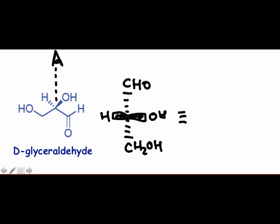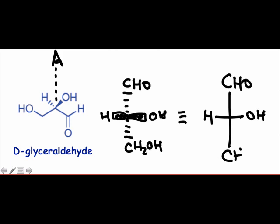The aldehyde and CH₂OH group are going away from us. Although Fischer projections are usually drawn without wedges and dashes, they always imply that the horizontal bonds are coming out toward you, while the vertical bonds are pointing away from you.